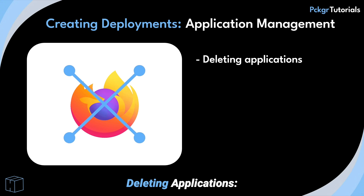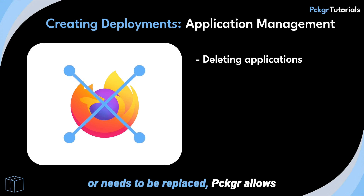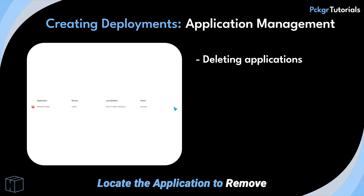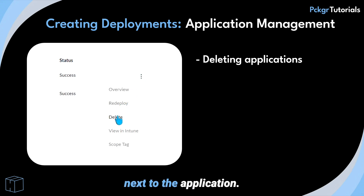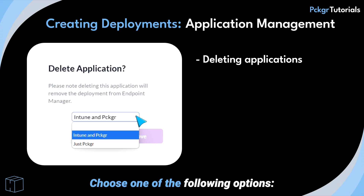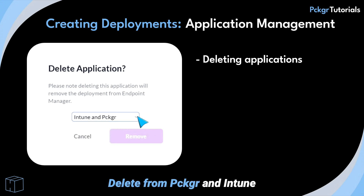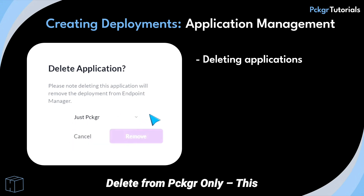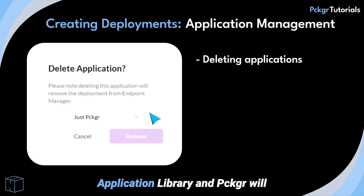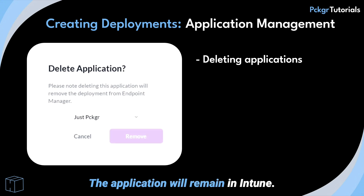Deleting applications. If an application is no longer required or needs to be replaced, Packager allows for simple and efficient removal. Locate the application to remove, click the three-dot menu next to the application, and select Delete from the menu. Choose one of the following options: Delete from Packager and Intune — this removes the application from both Packager and Intune. Delete from Packager only — this removes the application from your application library, and Packager will no longer manage the updates, but the application will remain in Intune.